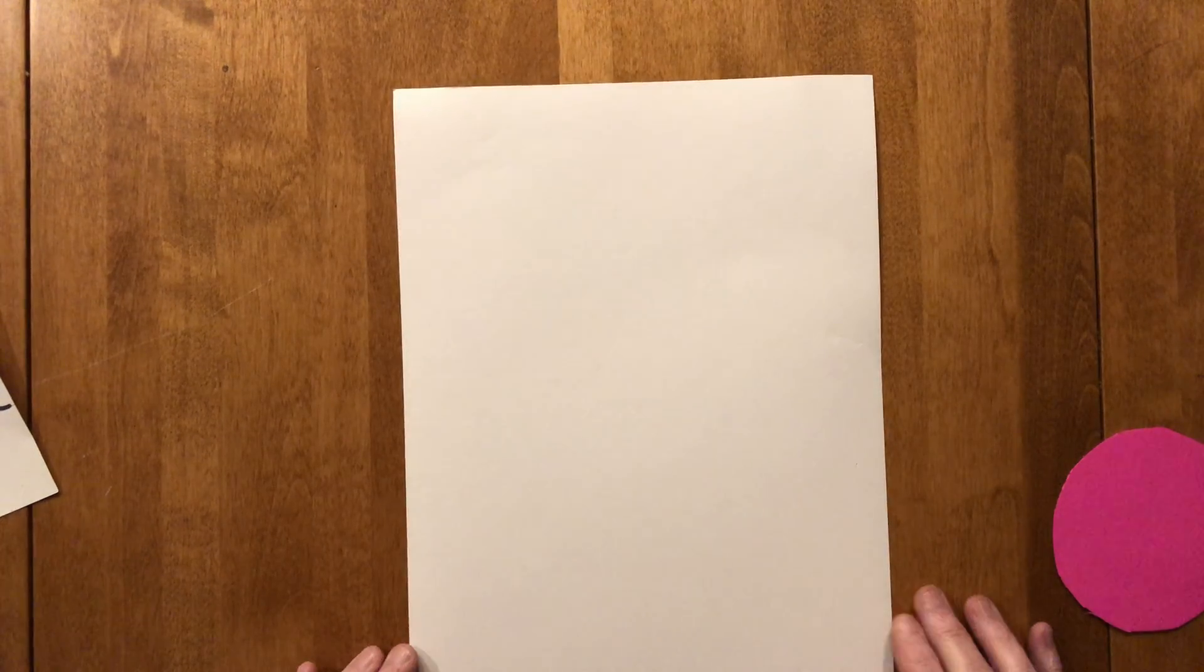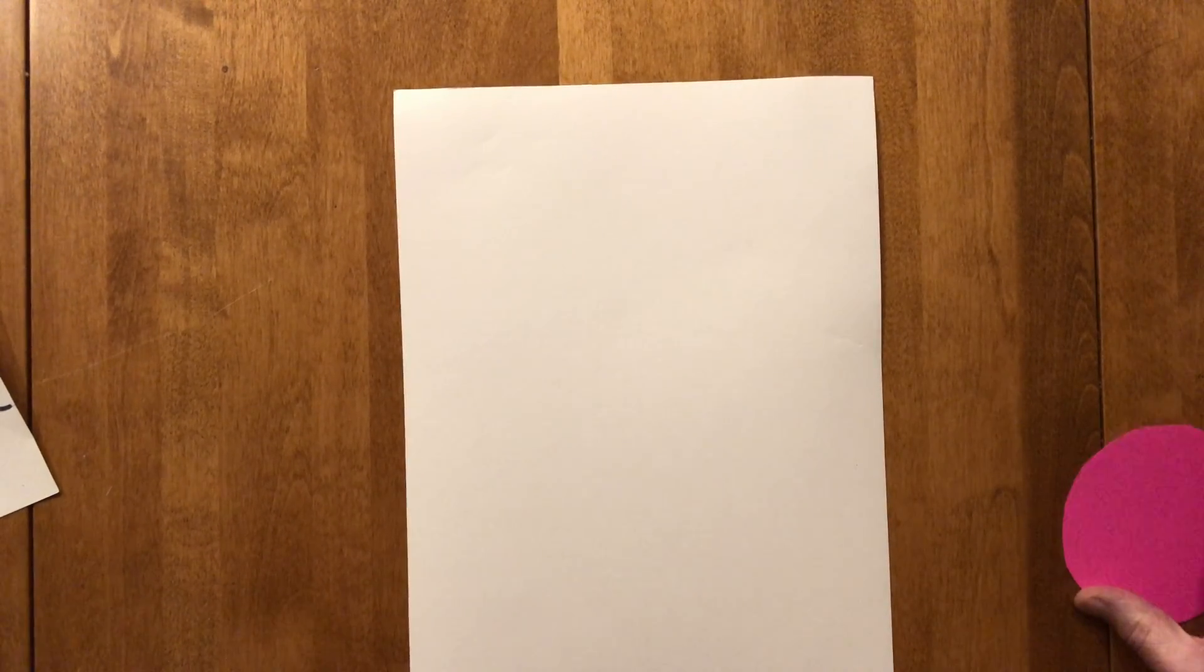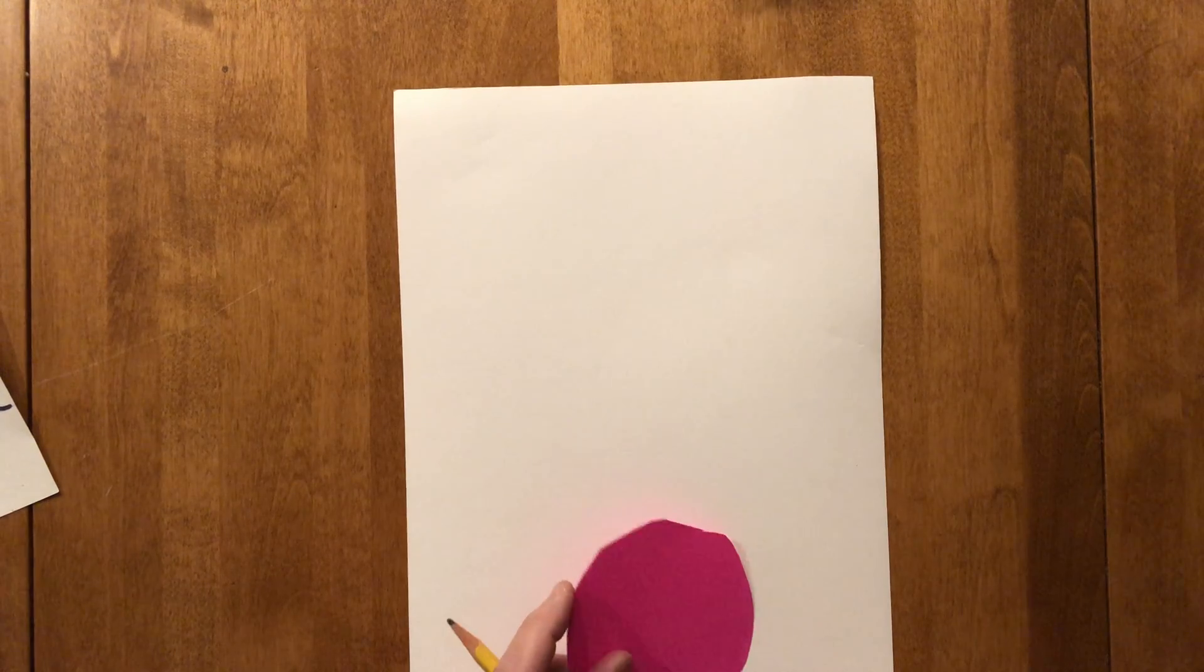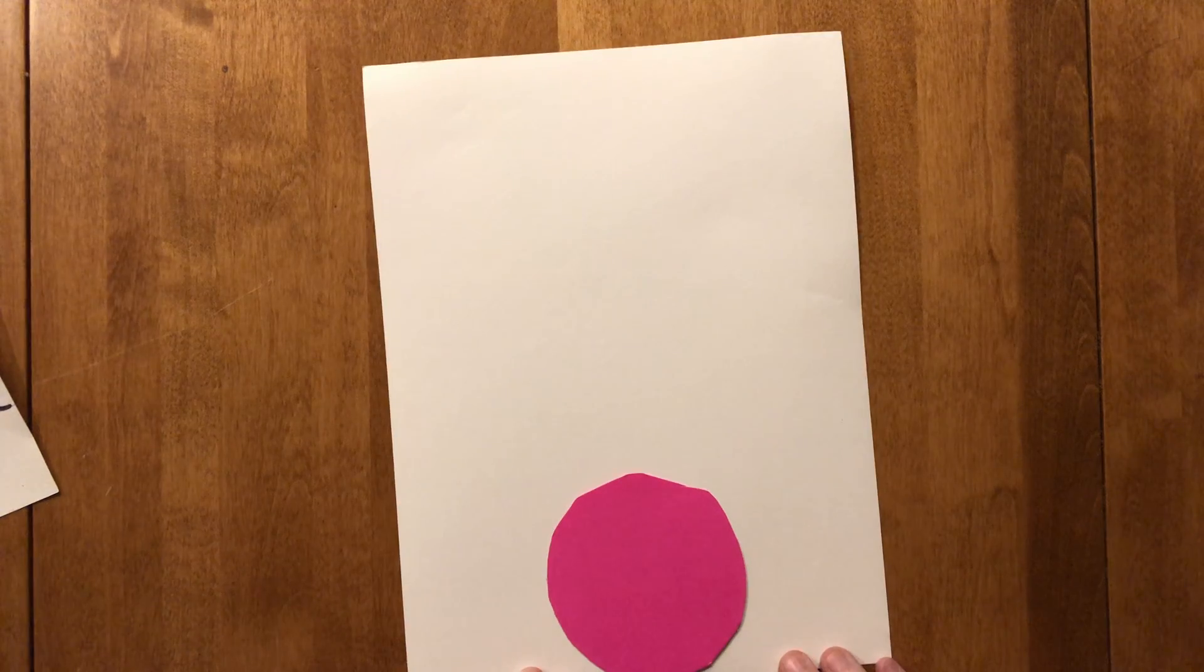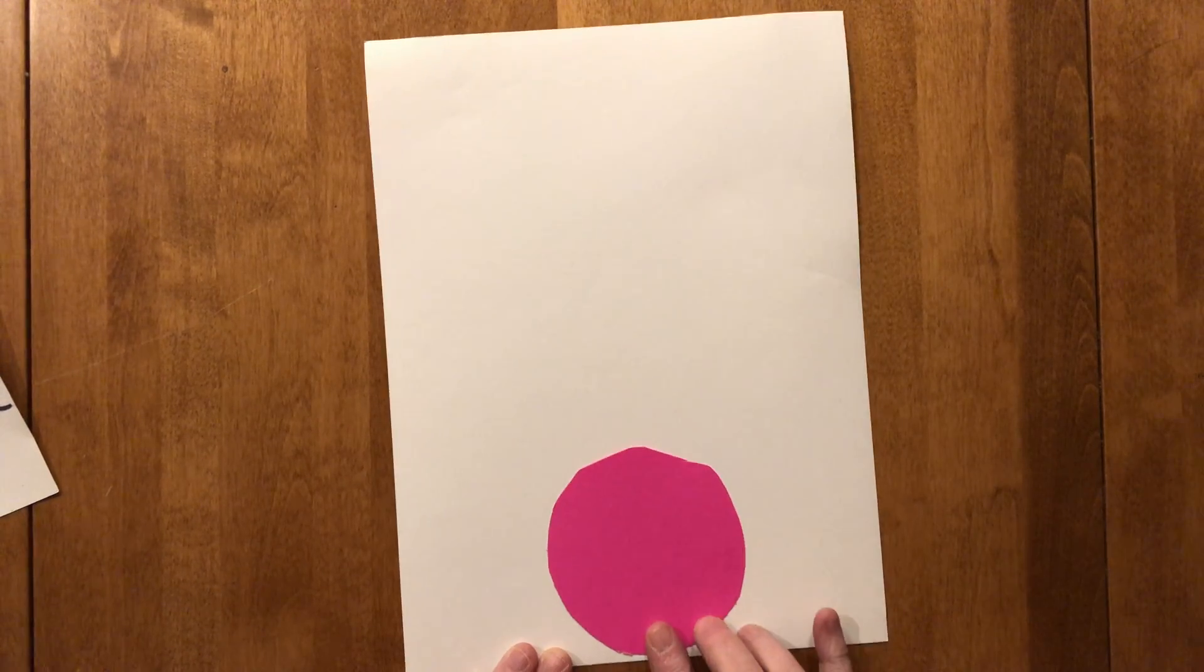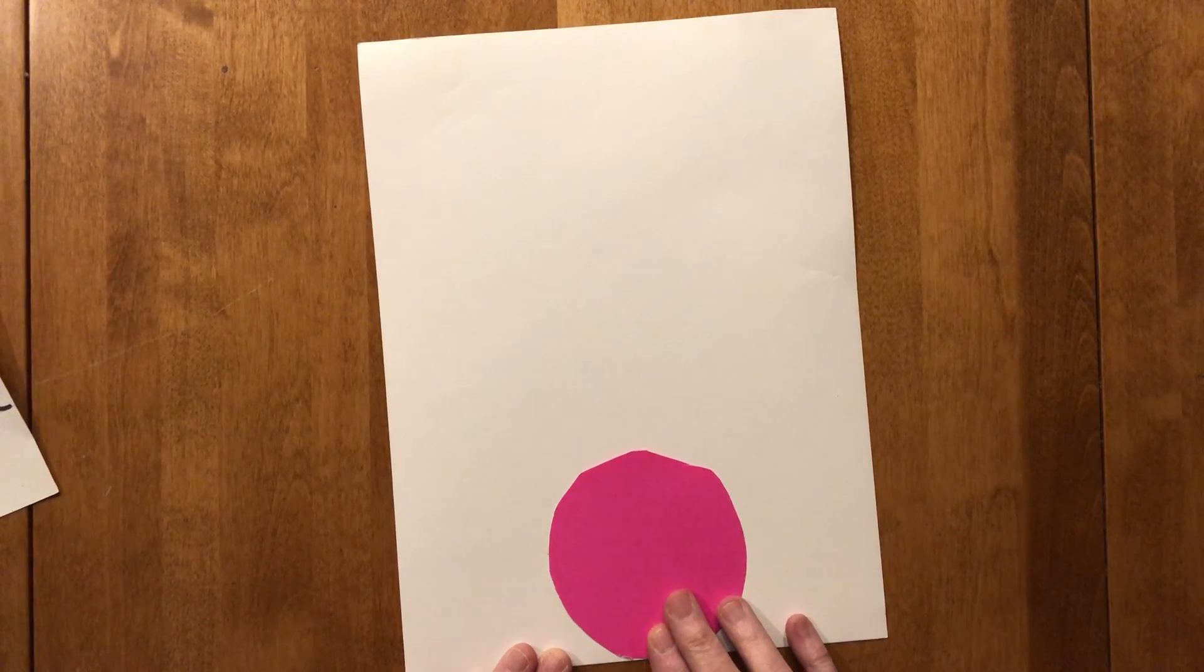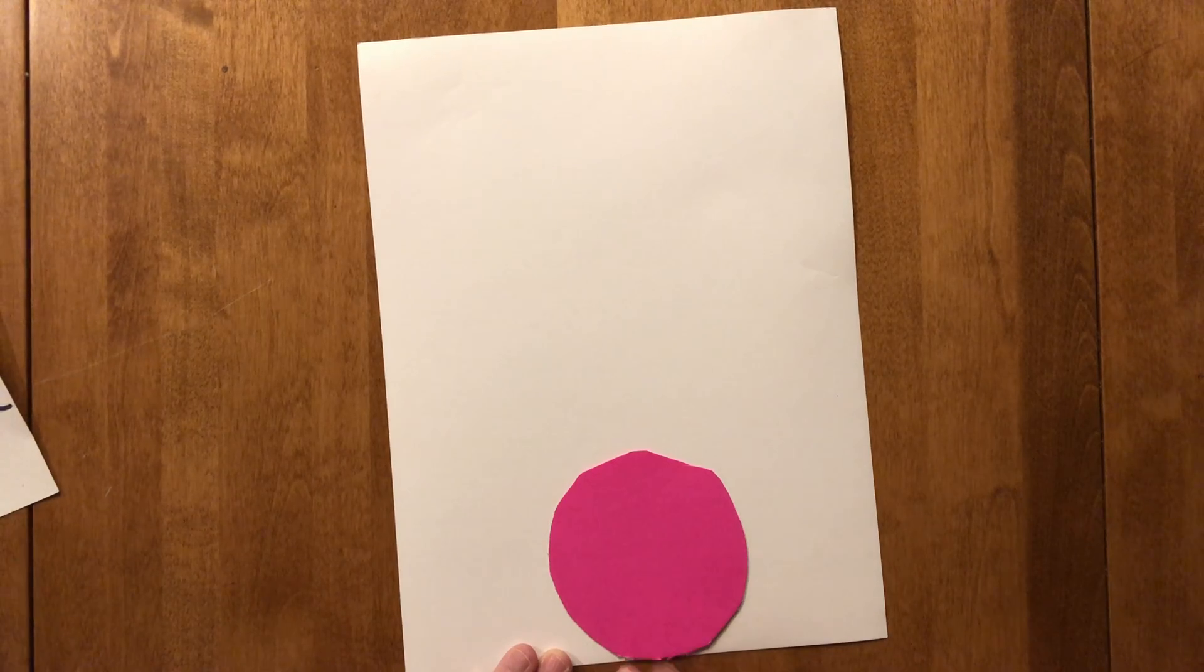Today we're going to be holding it in the hot dog or long up-and-down direction. Then you're going to take your pink tracing dot and we're going to trace it three times but we're going to start all the way at the bottom of the paper. So make sure you're at the bottom of your paper and that you're holding it in the hot dog direction.